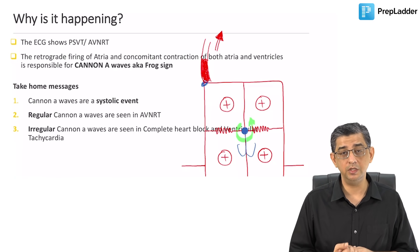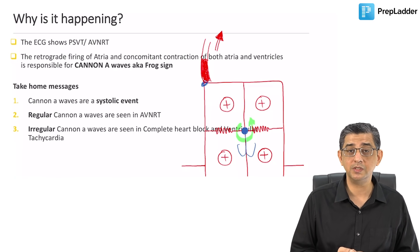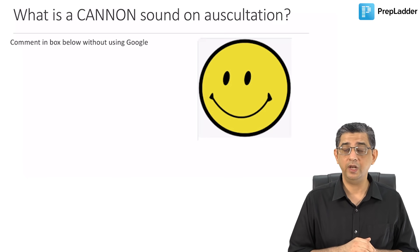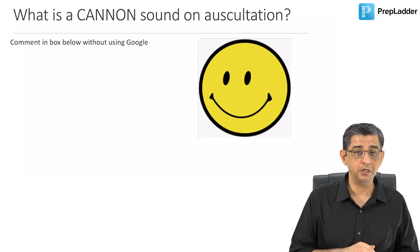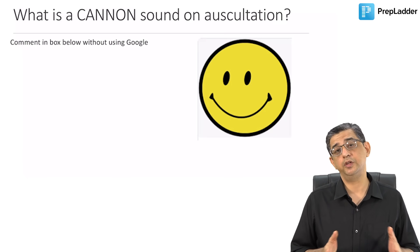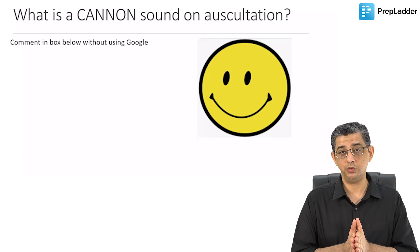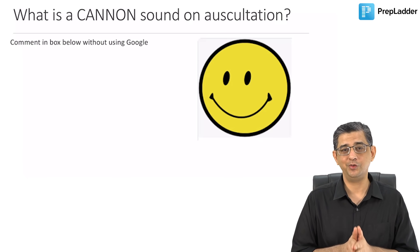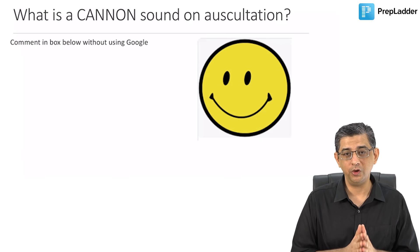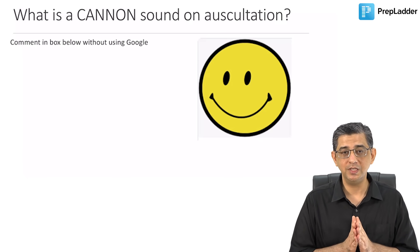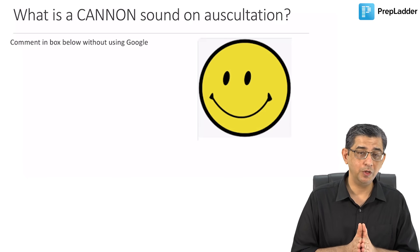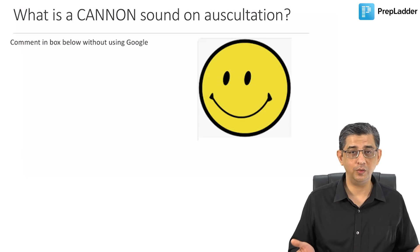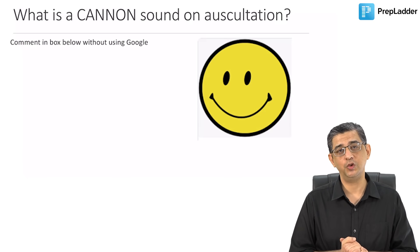The details for that are present in the ECG and arrhythmia section in the main part of the app. I have a question for you which you should answer without using Google: what is the cannon heart sound on auscultation? Please comment in the box below, and I shall see you again with another educational video like this. Thank you.